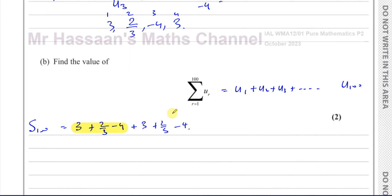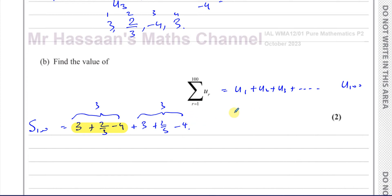So if you were to find the sum of the first 100 terms, the first 99 terms are made up of repeating cycles of 3, 2/3, and -4. The 100th term would be a 3. In the first 6 terms you have 2 sets, in the first 9 terms you have 3 sets, so in the first 99 terms you have 33 sets of these three numbers — and then the 100th term is a 3.